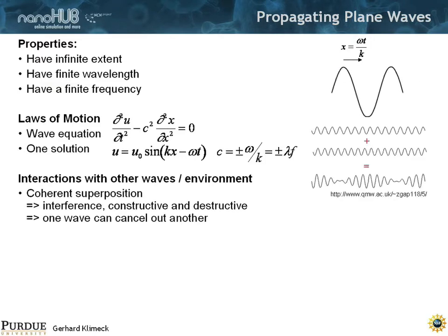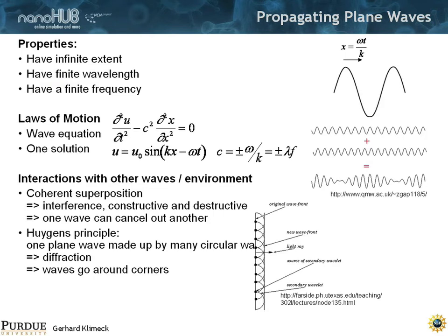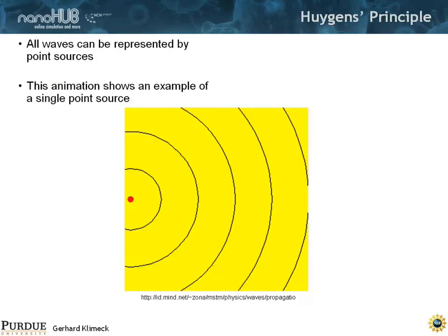We know that they interact with other waves or the environment. We know that there can be coherent superposition. You can have interference and constructive and destructive interference. We even know that they can cancel out each other. Two waves add and you can have these modulations and these waves can cancel out. There's nothing essential quantum mechanics about this. This is just normal properties of waves. We know of the Huygens principle that one plane wave can be made up by many circular waves, which allows us to describe diffraction and that waves can go around corners.